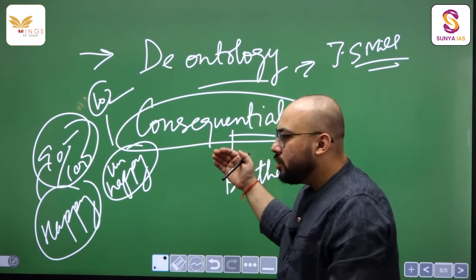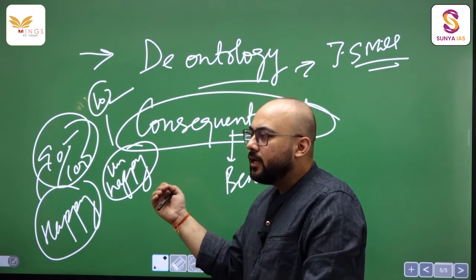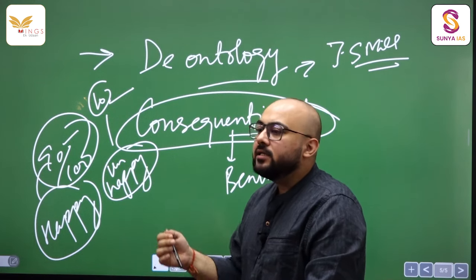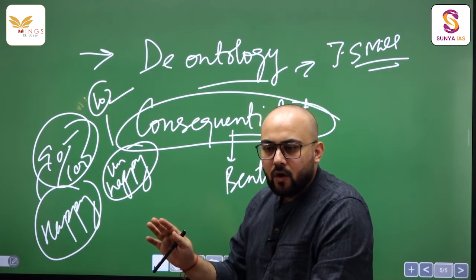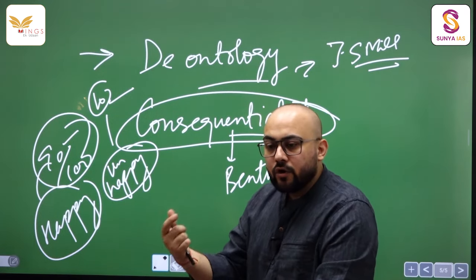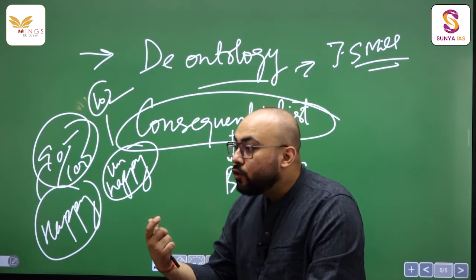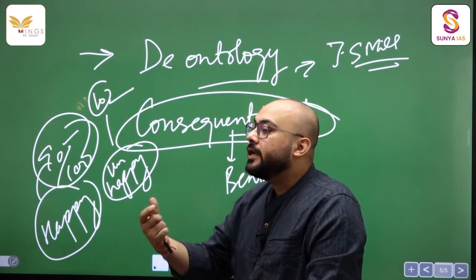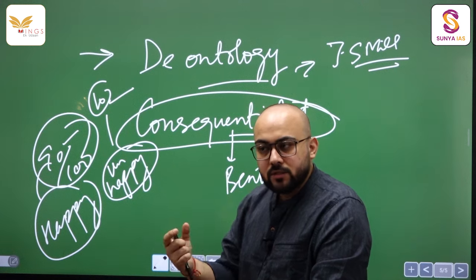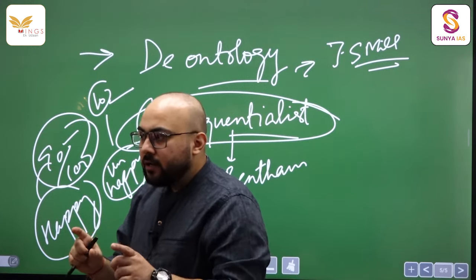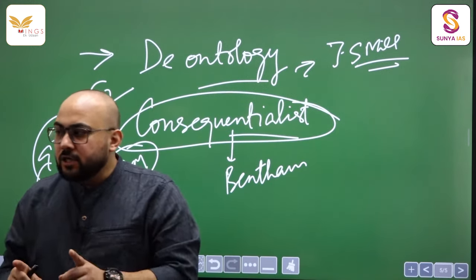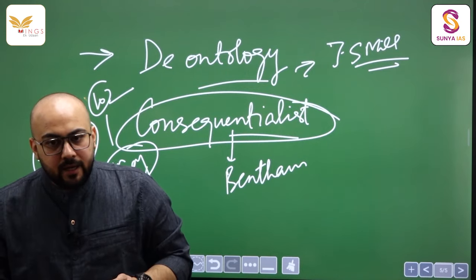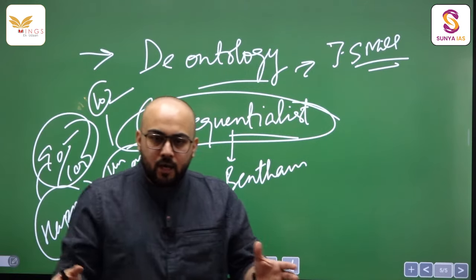Since Bentham belongs to the consequentialist school of thought, he is saying that the ends matter and means don't matter at all. He talks about happiness and pleasure in quantitative terms, not qualitative terms. Since Bentham is talking about pleasure quantitatively, he even created the felicific calculus to calculate and make it tangible.